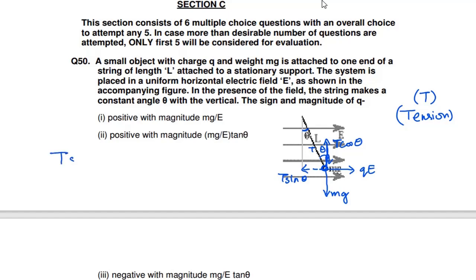So we have two equations to balance them out: T sin theta equals qE, and T cos theta equals mg. Now divide them both. You will get T sin theta over T cos theta equals qE over mg. T cancels, you are left with tan theta equals qE/mg.